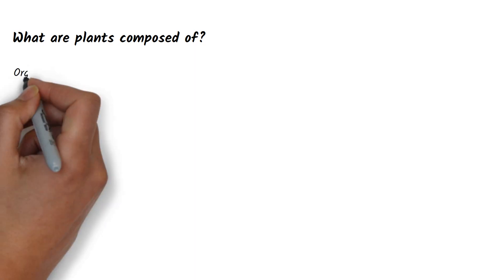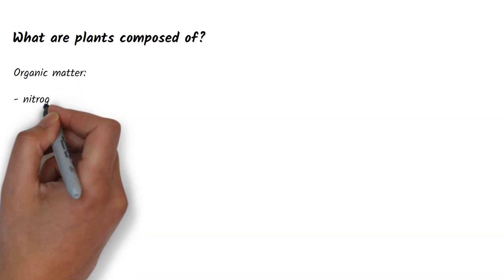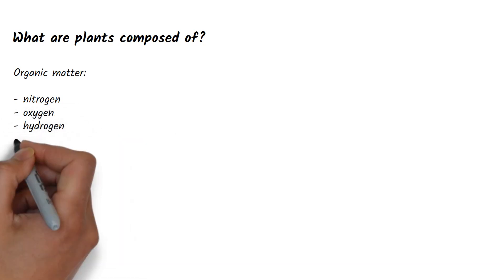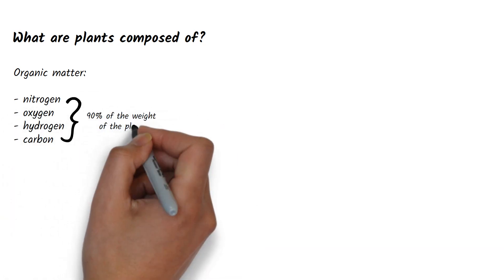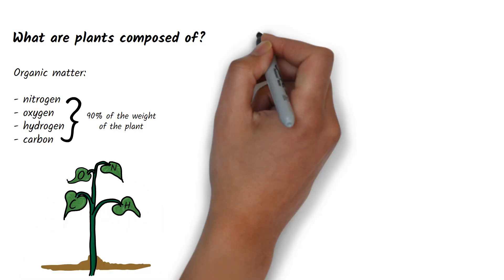In order to understand how to properly nourish and take care of plants, let's take a look at what they are made of. Like other living things, plants consist of organic matter, which is made up of nitrogen, oxygen, hydrogen and carbon.